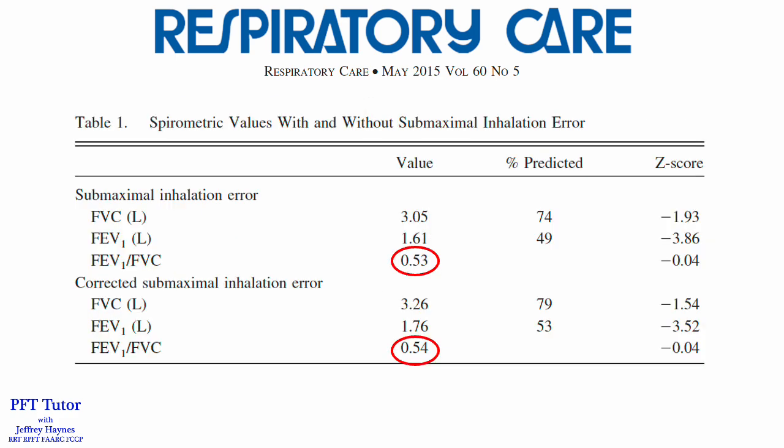Let's look at the data that was generated from these different flow volume loops. In terms of the FEV1 to FVC ratio, there was no difference. When there was a submaximal inhalation error, the ratio was 53%, and when it was corrected, it was basically the same at 54%.